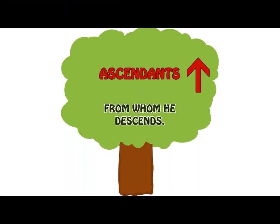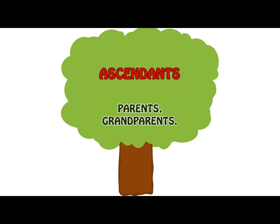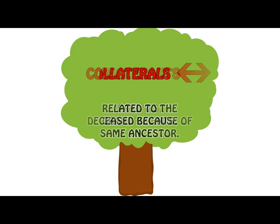In intestate succession, we also talk about ascendants. These are persons from whom the deceased person has descended. When we talk about ascendants of a deceased person, we are looking at the ancestors of the deceased person — in other words, anybody in the ascending line, such as parents and grandparents. A collateral refers to a person who is related to the deceased person because he or she has the same ancestor as that deceased person.